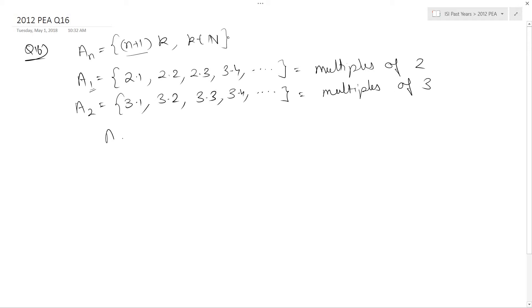The set A_n, generally, is the set of multiples of (n+1). So A_1 is multiples of 2, and A_2 is multiples of 3.